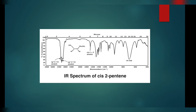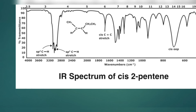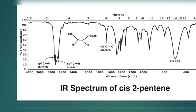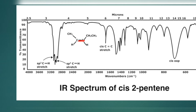Moving on to the next example, which is that of an alkene — specifically cis-2-pentene with a double bond. We have a peak at 3000 indicating an sp3 C-H stretch, and we also have a higher peak for an sp2 C-H stretch. Having both sp3 and sp2 C-H peaks means there must be a double bond present in the molecule.